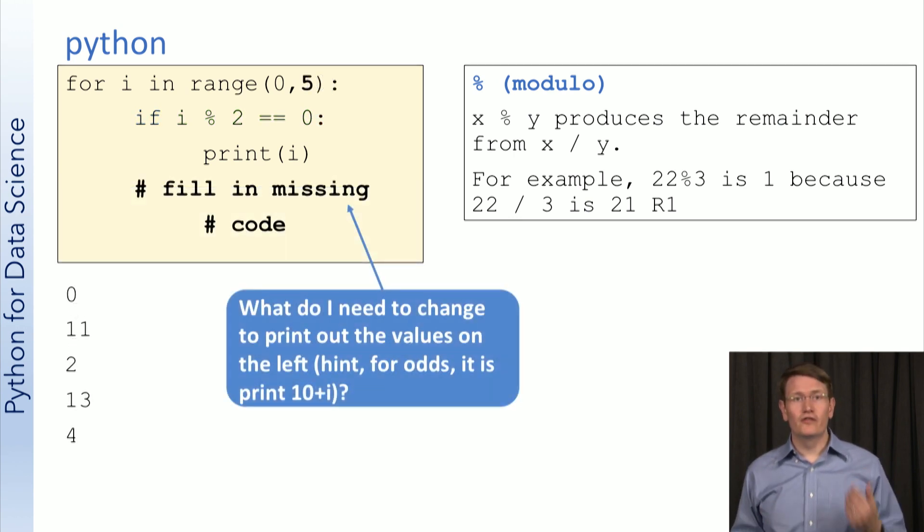Let's try solving another question. Suppose I want the output to be the output on the left, 0, 11, 2, 13, and 4. Effectively, we're printing the even values between 0 and 4, and we're printing the odd values plus 10.